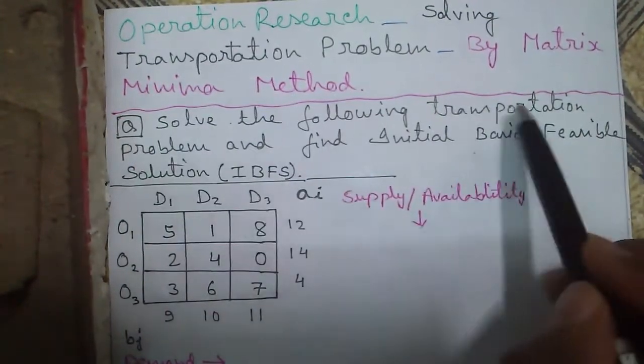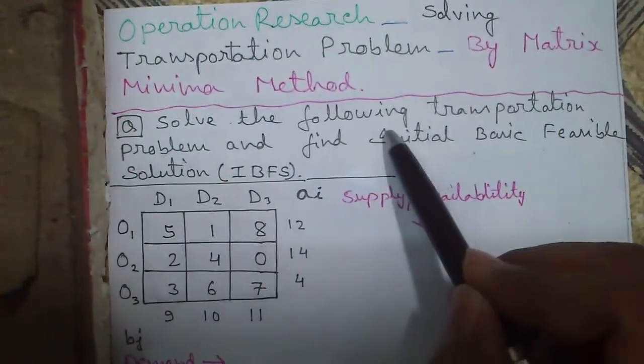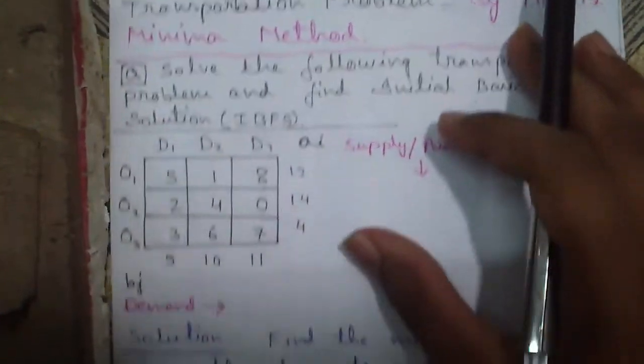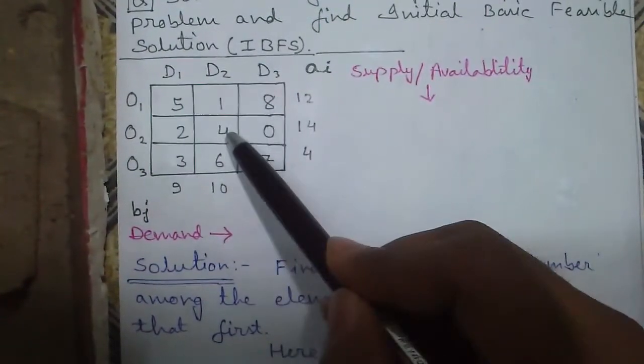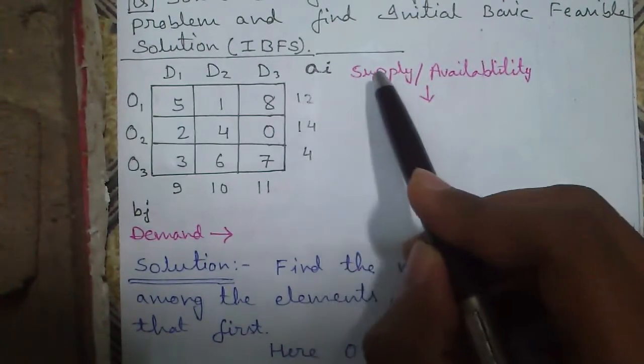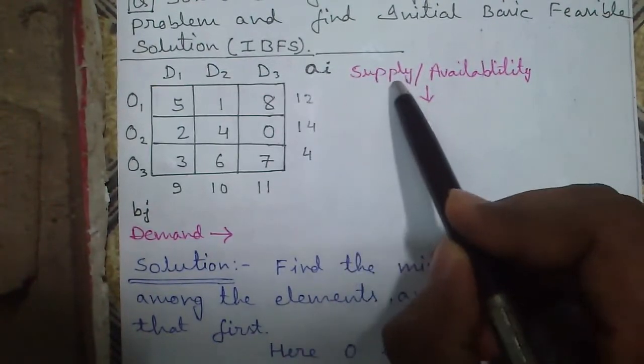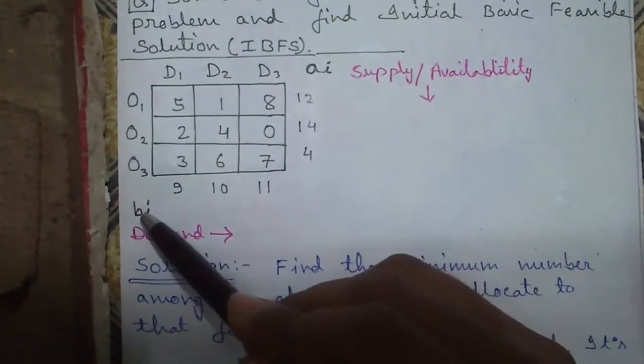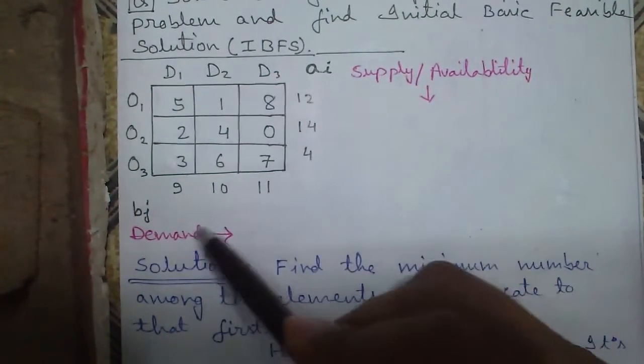Our question is to solve the following transportation problem and find the initial basic feasible solution or IBFS. This is called a cost matrix and this vertical column is called AI which denotes the total supply or total availability. And this horizontal row called BJ, the number denotes the total demand.